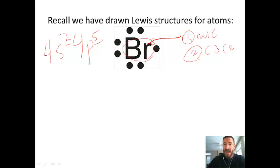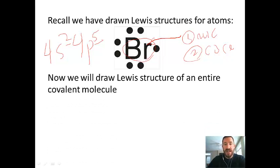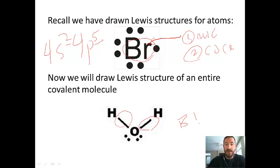So now we'll draw a Lewis structure for an entire molecule. For example, if we look at water, it's going to look something like this. The line will represent a shared pair of electrons, what we call bonding pairs, we'll abbreviate that BP. And the dots will represent lone pairs, which we'll abbreviate LP.